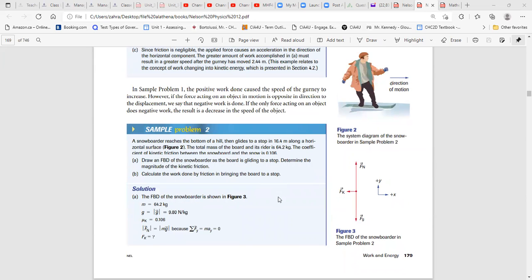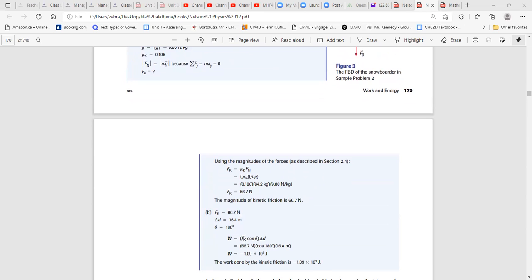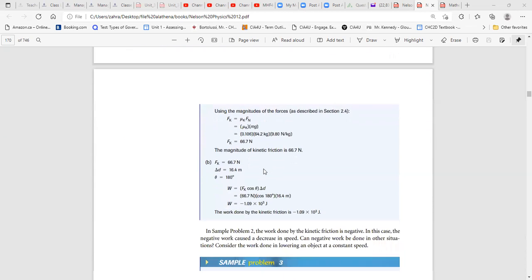Calculate the work done by friction to bring the board to stop. It is moving 16.4. Since the friction here, displacement is a positive direction, the angle between the force and the displacement is 180 degrees. That's why when you put that in equation, the friction force, we got it from the previous step, cosine of theta, angle 180 degrees, delta D is 16.4. You get cosine of 180 is negative one. That's why your answer would be negative. So if the force is applied to the opposite direction of displacement, it will give you negative work.